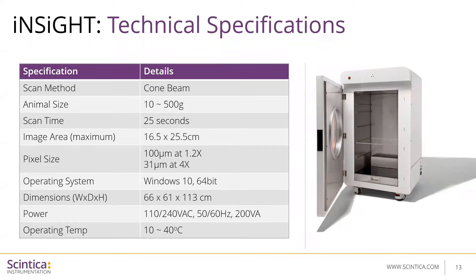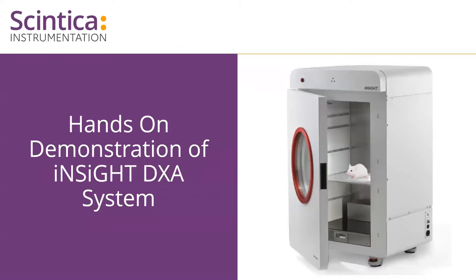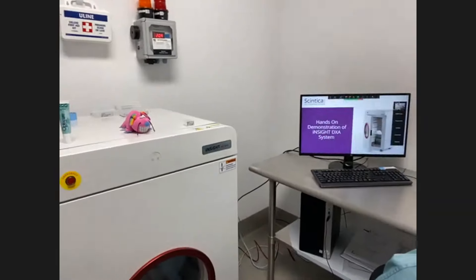The system uses cone beam x-ray technology, which is what allows the scan time to be so fast. It doesn't have to traverse over the animal for acquisition — it uses a cone beam to send the x-ray source across the entire field of view. The system uses a standard electrical connection and is self-shielded. At this point I'm going to get my colleague Sonica to turn on the camera.